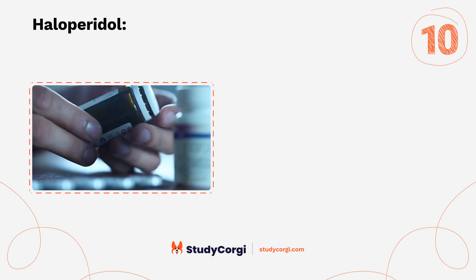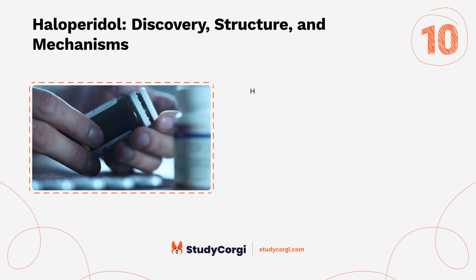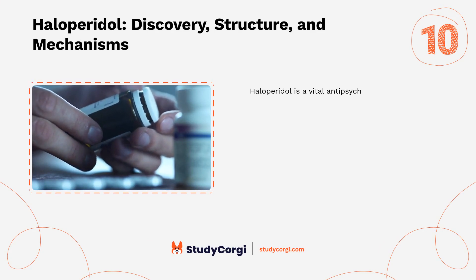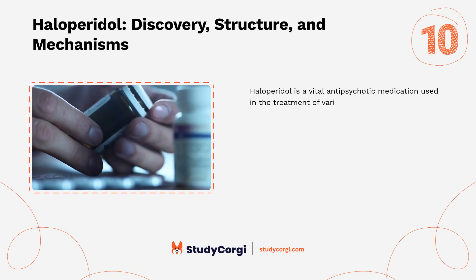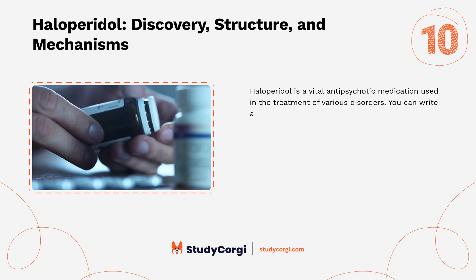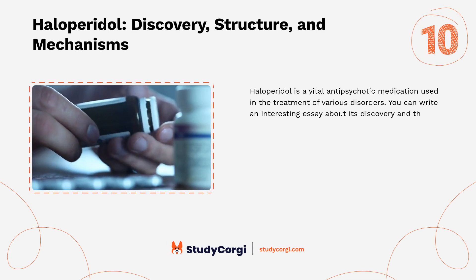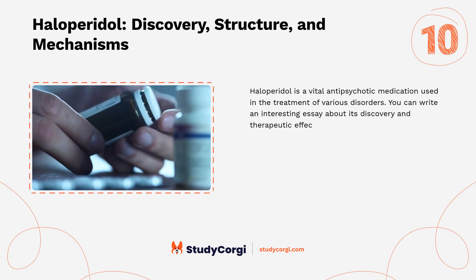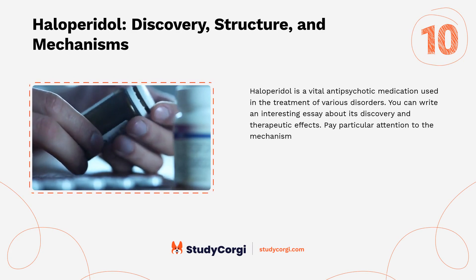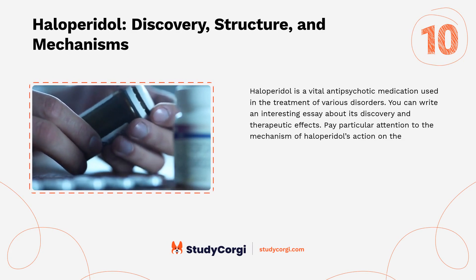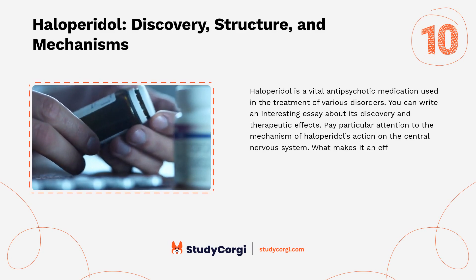Topic 10: Haloperidol — discovery, structure, and mechanisms. Haloperidol is a vital antipsychotic medication used in the treatment of various disorders. You can write an interesting essay about its discovery and therapeutic effects. Pay particular attention to the mechanism of haloperidol's action on the central nervous system and what makes it an effective medication.